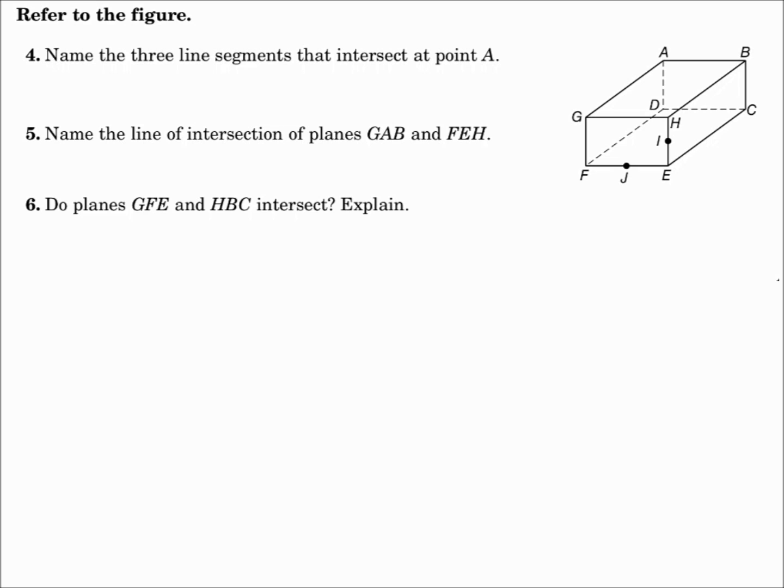Refer to the figure. Name three line segments that intersect at point A. Well, there's point A. Segment AB is one of them. You put a segment bar with two capital letters underneath. Segment AG. And segment AD. Segments have a bar over top of two capital letters.